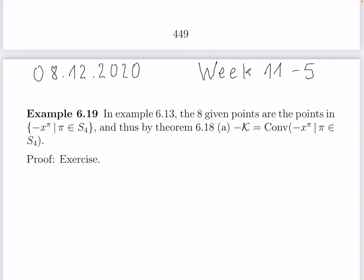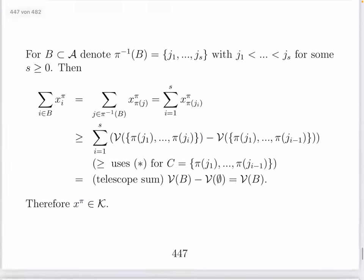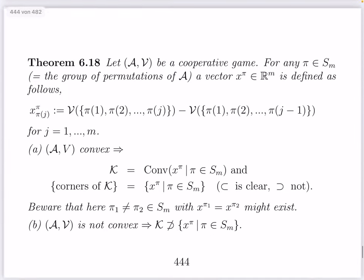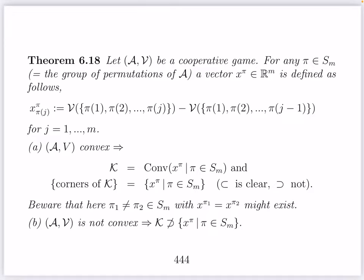I want to make some calculations and show this for at least two examples. Let me first go back to the definition of these permutation vectors. If you start with a cooperative game with m players and look at some permutation π in the symmetric group S_m, then we get the permutation vector x^π such that the entry at index π(j) is the difference of two coalition values: v({π(1), π(2), ..., π(j)}) minus v({π(1), π(2), ..., π(j−1)}).